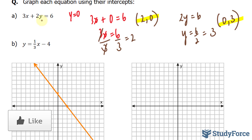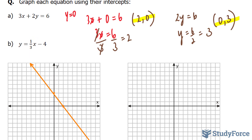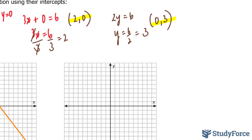Let's do the same thing for B. This time we have y equals one-third x minus 4. This particular equation is in slope-intercept form. That doesn't change anything. Once again, I'll set y equal to 0 and solve for x, and I'll show my work over here.